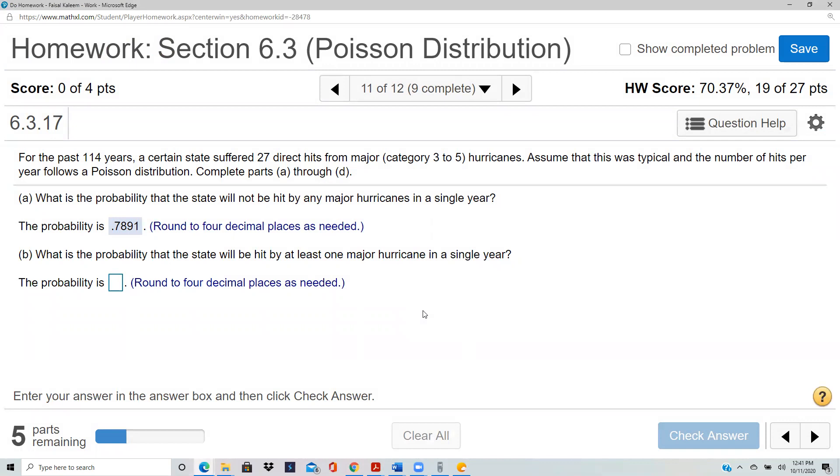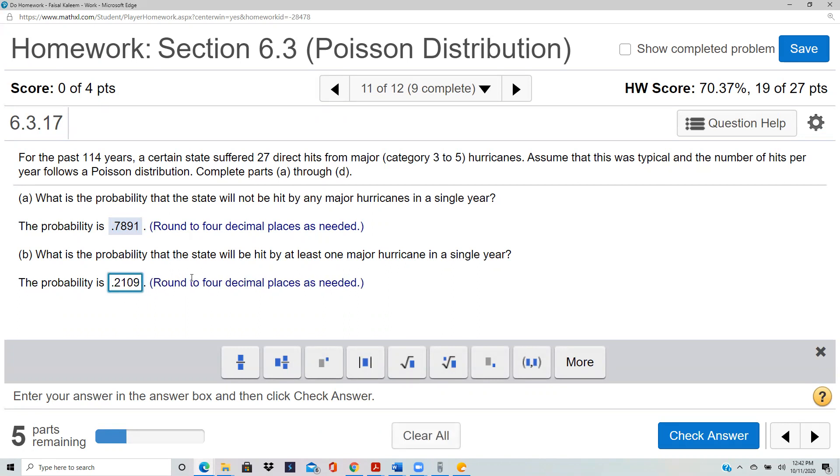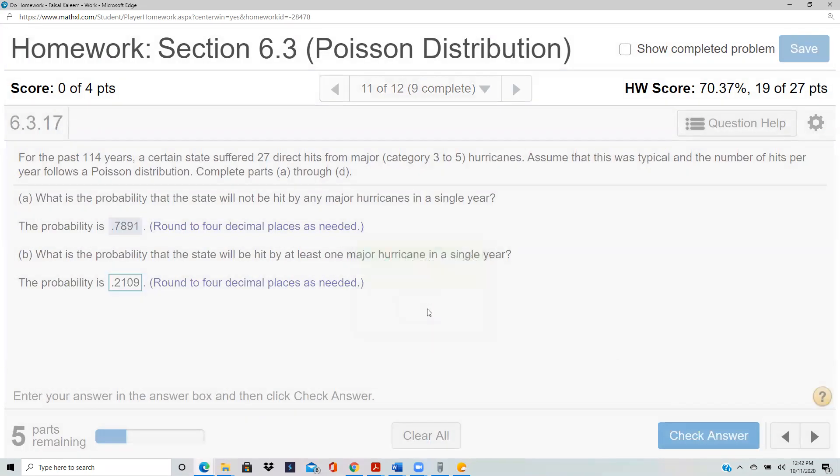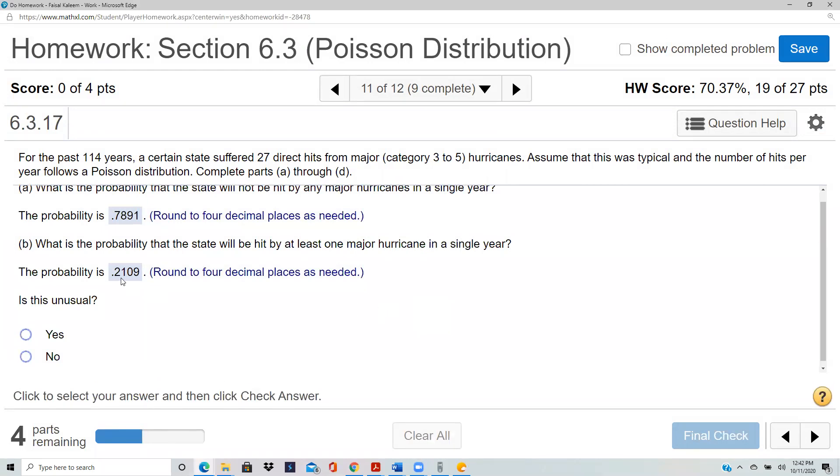And what's the probability hit by at least one? At least one means greater than or equal to one. You can do greater than or equal to one, but I can see that at least one will be the complement of zero, so it would be 0.2109. I'm subtracting this from one. Is this unusual? The 0.2109 is 21%, which is not unusual because it's bigger than 5%, so no.